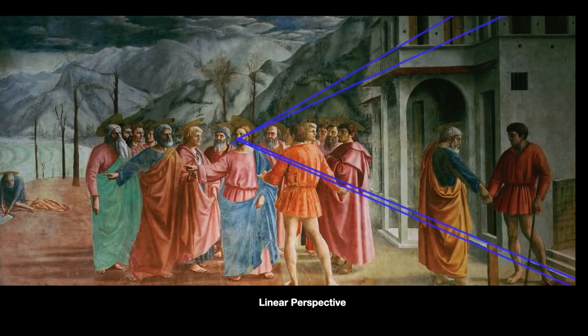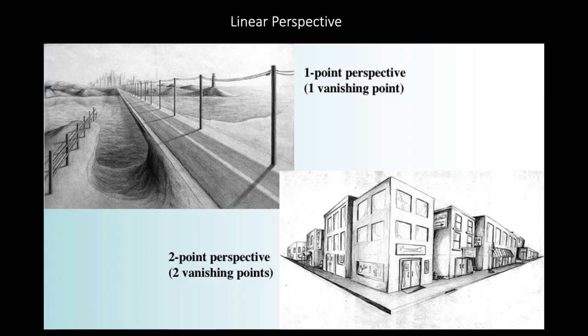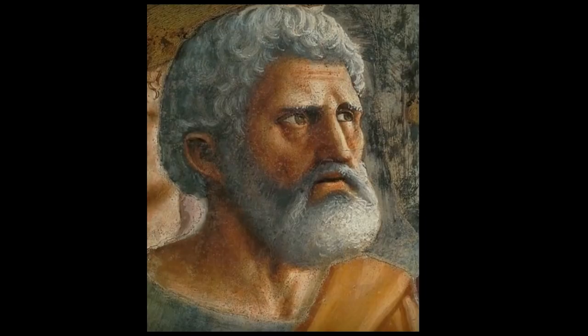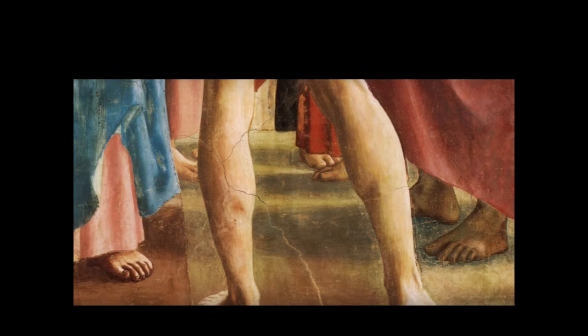Linear perspective was also used in this painting, where you see Christ's head as the vanishing point — another technique used to create the illusion of 3D space. Here we can see details like the muscles on the tax collector's legs and shadows cast by the other figures.